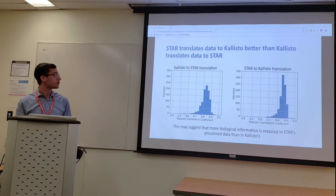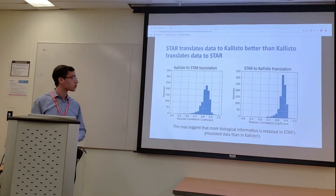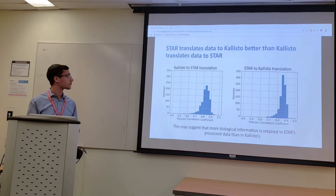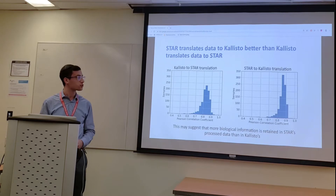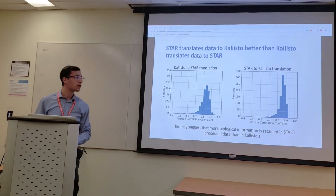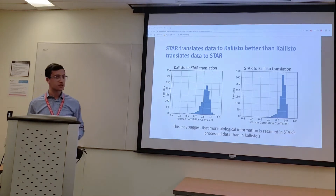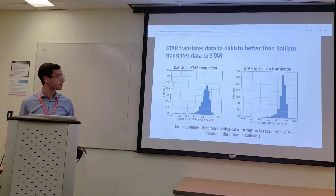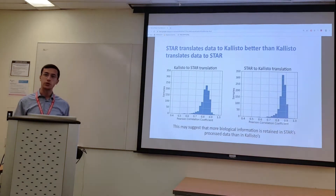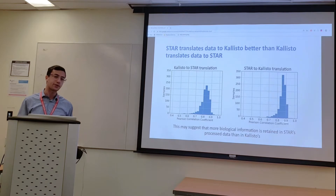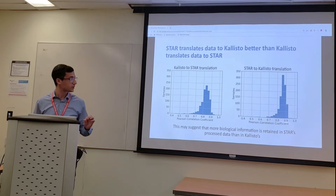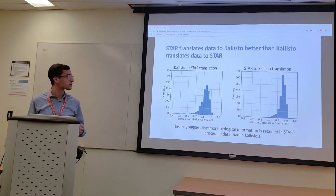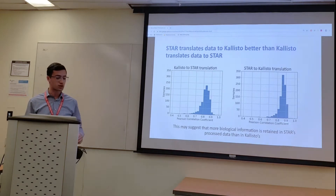This is a visualization of the distribution of Pearson correlations across all 1,000 samples after both the Kallisto-to-STAR translations on the left and the STAR-to-Kallisto translations on the right. While slight, it does appear that data aligned with STAR can be translated into a Kallisto representation better than the other way around. This may indicate a level of superiority with the STAR aligner in terms of the amount of information stored in the data which it aligns.